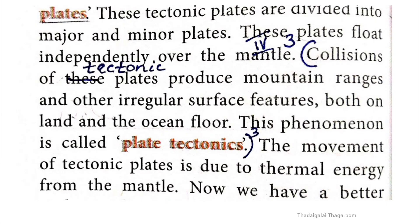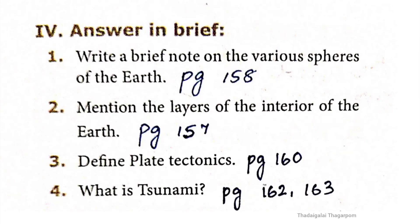Collisions of tectonic plates produce mountain ranges and other irregular surface features both on land and the ocean floor. This phenomenon is called plate tectonics. That is the answer to the first question.